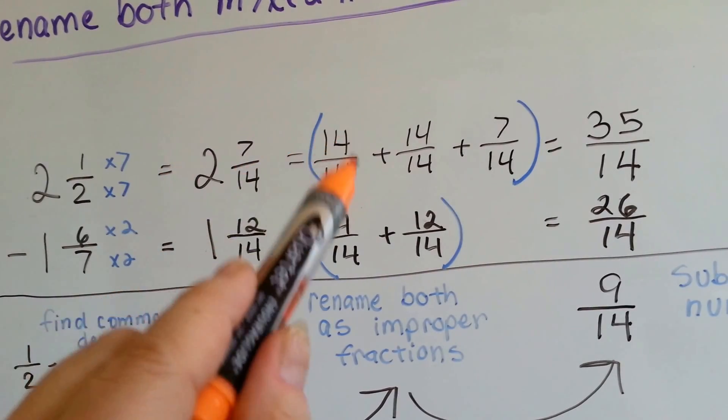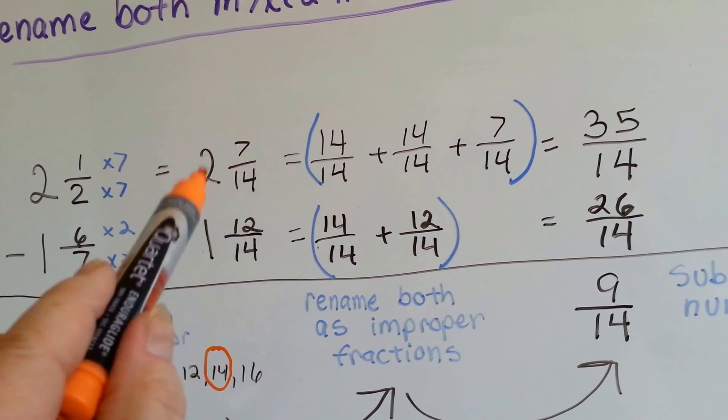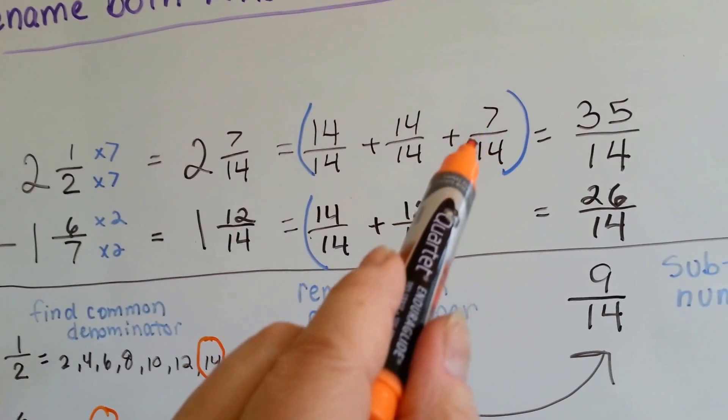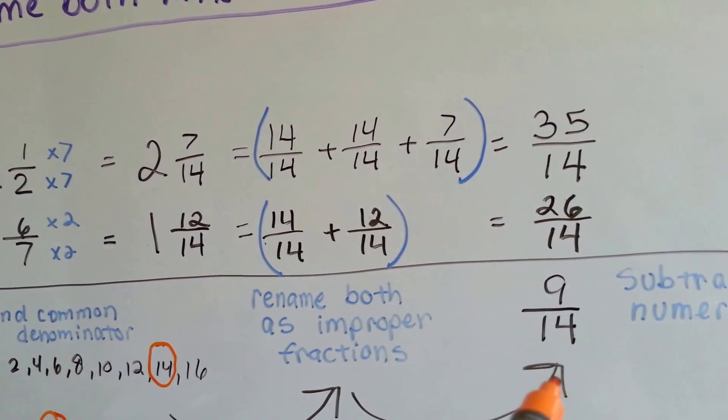This one, knowing that 14 fourteenths is 1, we turn the 2 into 2 of them. See? Here's 1, 2, and we add it to the 7 fourteenths. Now we've got 35 fourteenths.